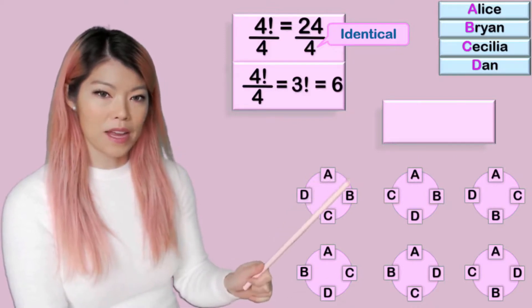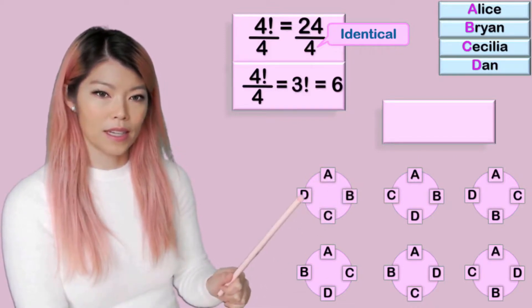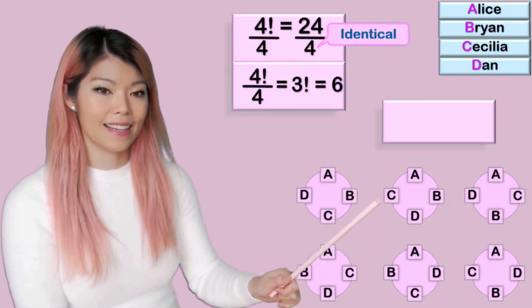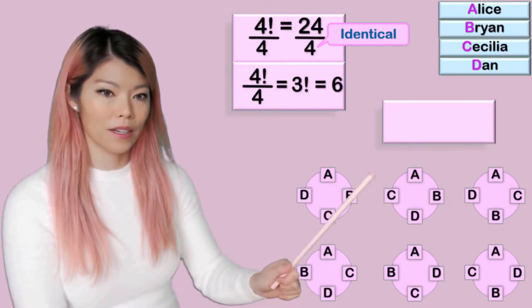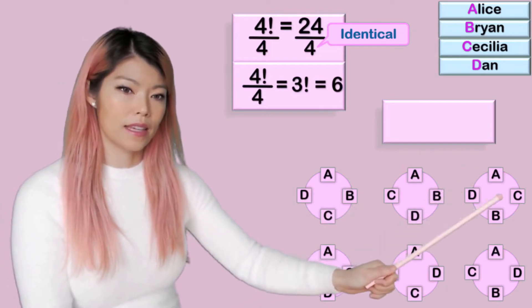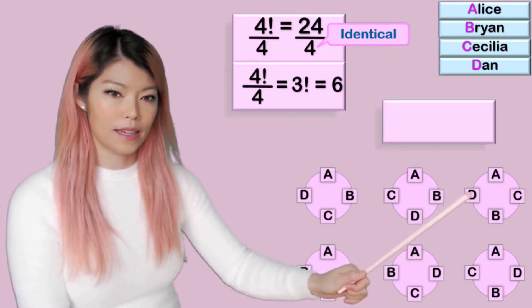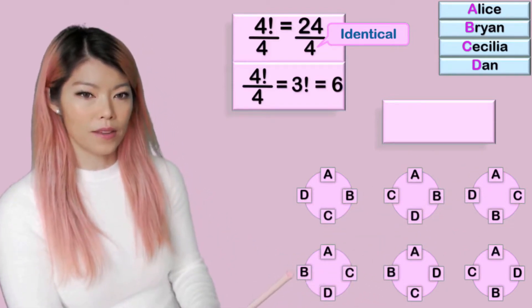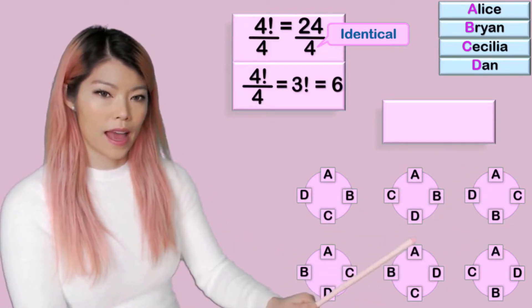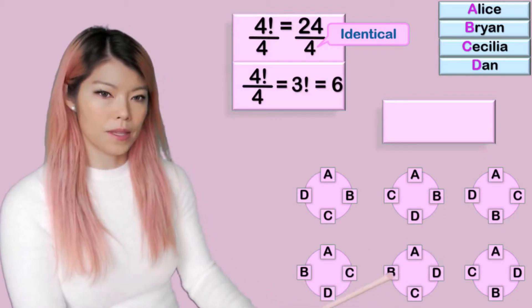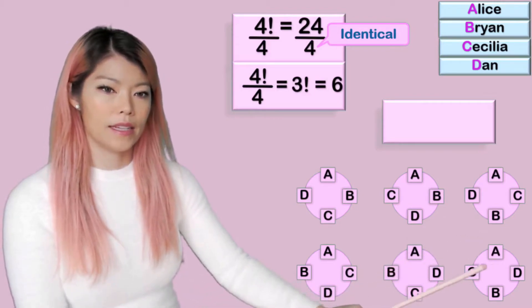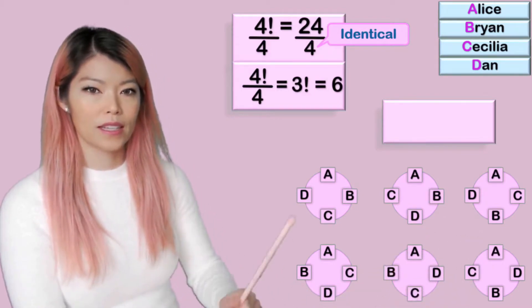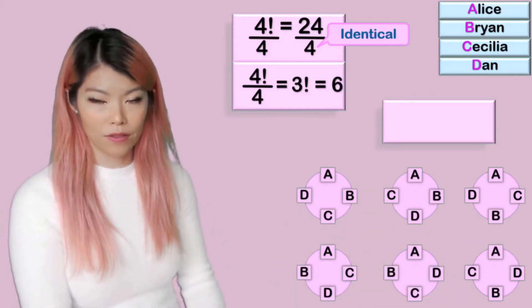So we have: A B C D, A B D C — these are different. Then A C B D, A C D B, A D C B, and A D B C. So these are the six different arrangements.